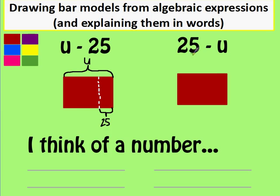And over here then, 25 take away u. So now this bit, the whole box is 25, but we're going to take away u from it. So snipping this bit off and we need to annotate this bit as u. So two different expressions, two different bar models. They do mean different things.